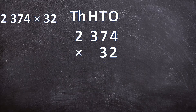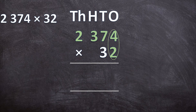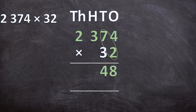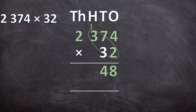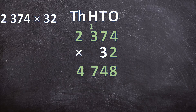So 2 times 2374. First we multiply the ones: 4 times 2 is 8. Next, 7 times 2 is 14 — write down the 4 and carry over the 1. Then 3 times 2 is 6, but remember we carried over that 1, so 6 plus 1 is 7. And now we multiply the last digit: 2 times 2 is 4. So 2 times 2374 is 4748.